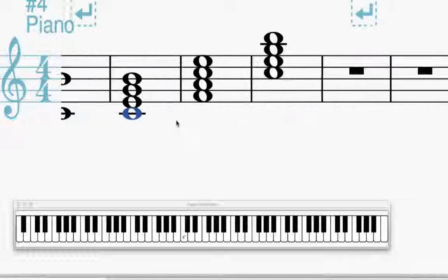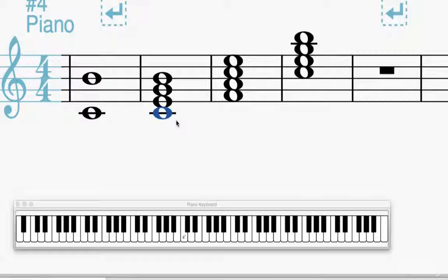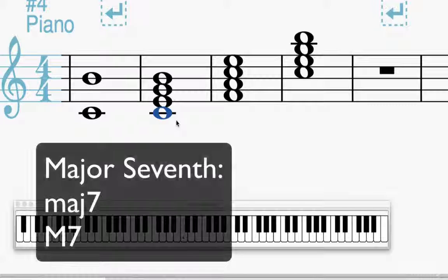So we call that a major seventh chord. Now we notate this by, if we're just going to write out the name of it, we can either write M-A-J and then a subscript 7, or sometimes we write a capital M and then 7. Or sometimes if you're looking at jazz music, you might see this triangle thing. So like F triangle means major 7. You don't see that very often anymore, but sometimes in older jazz notation you see that.